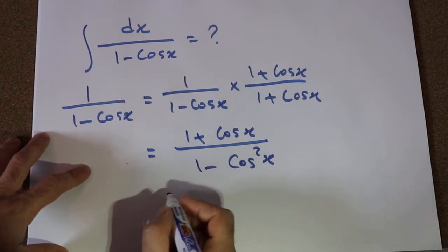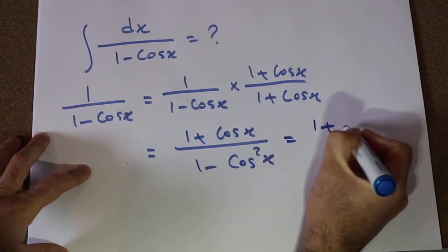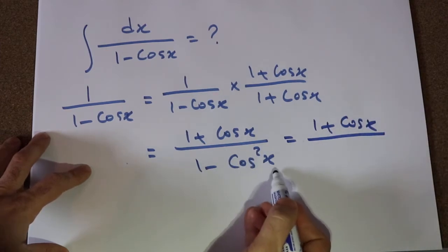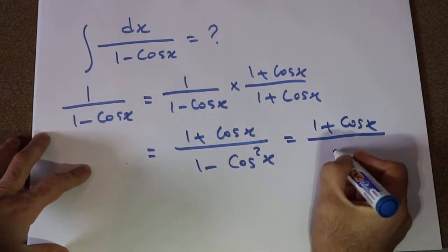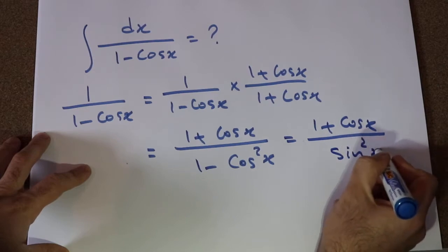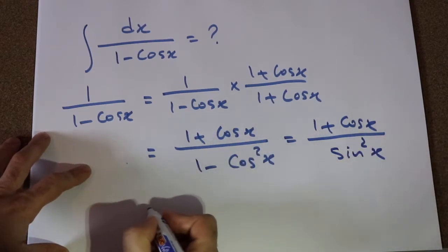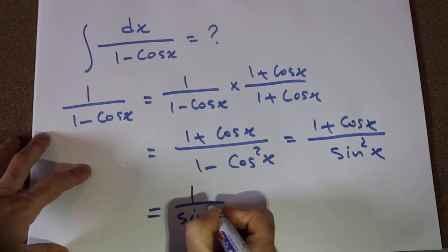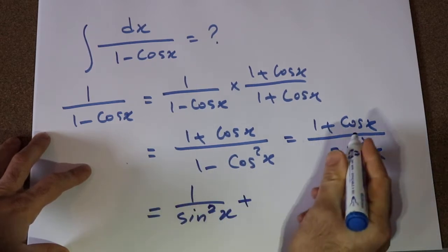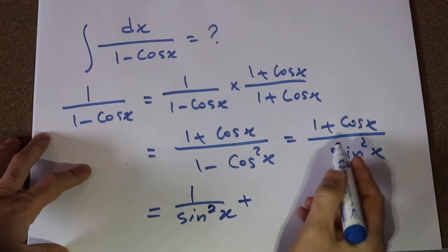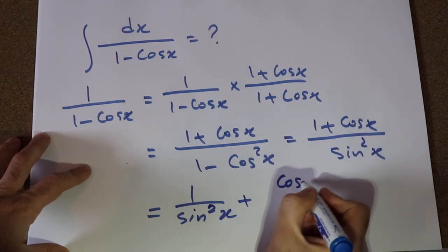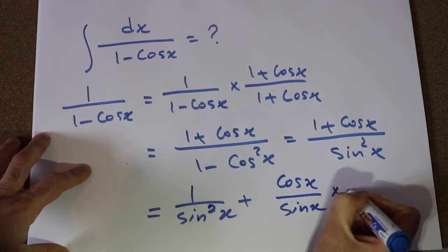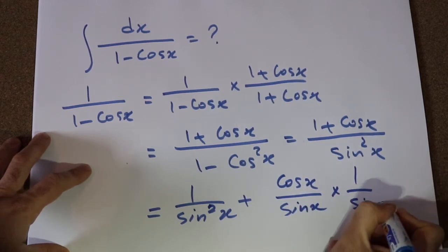Therefore, you can write this as 1 plus cosine x divided by 1 minus cosine squared x. From trigonometry, we know that 1 minus cosine squared x is equal to sine squared x. Therefore, this becomes 1 divided by sine squared x plus cosine x divided by sine squared x, which I can write as cosine x divided by sine x times 1 divided by sine x.